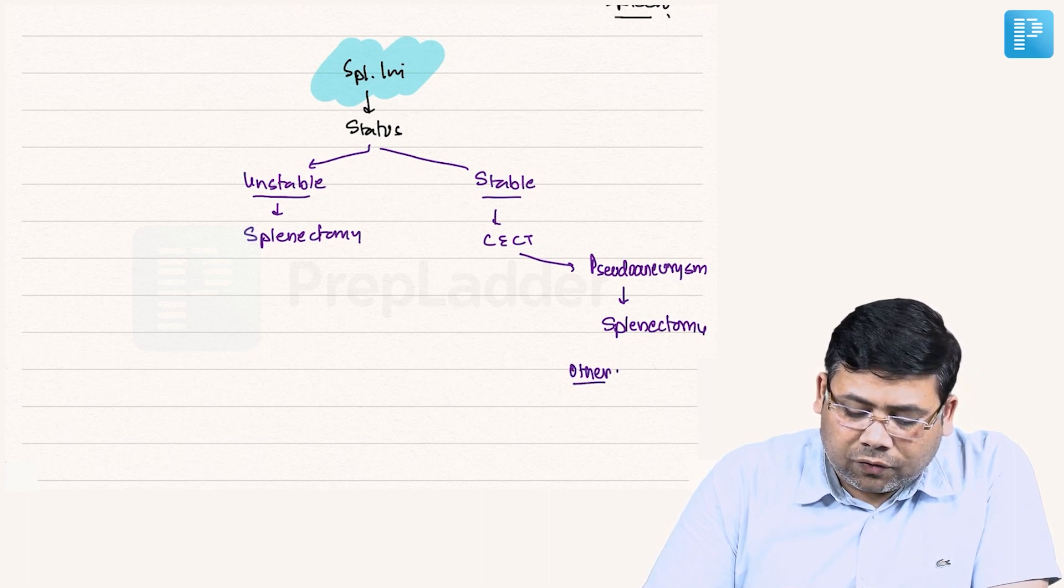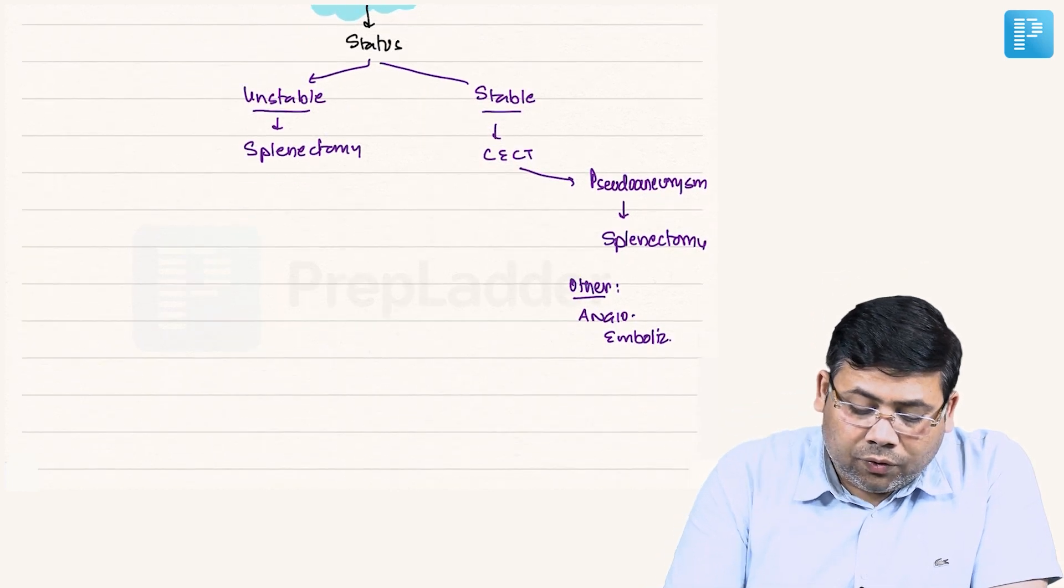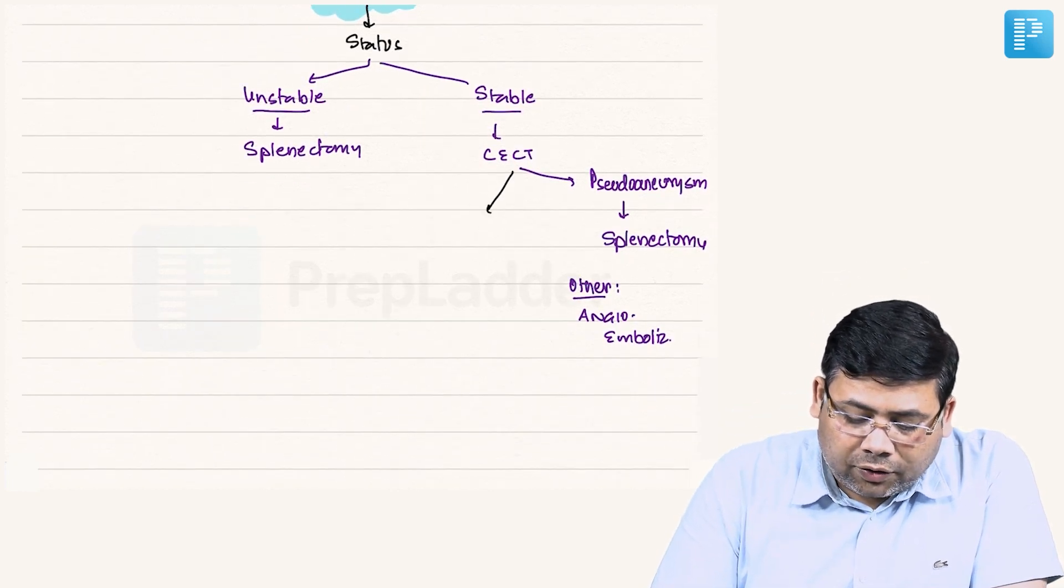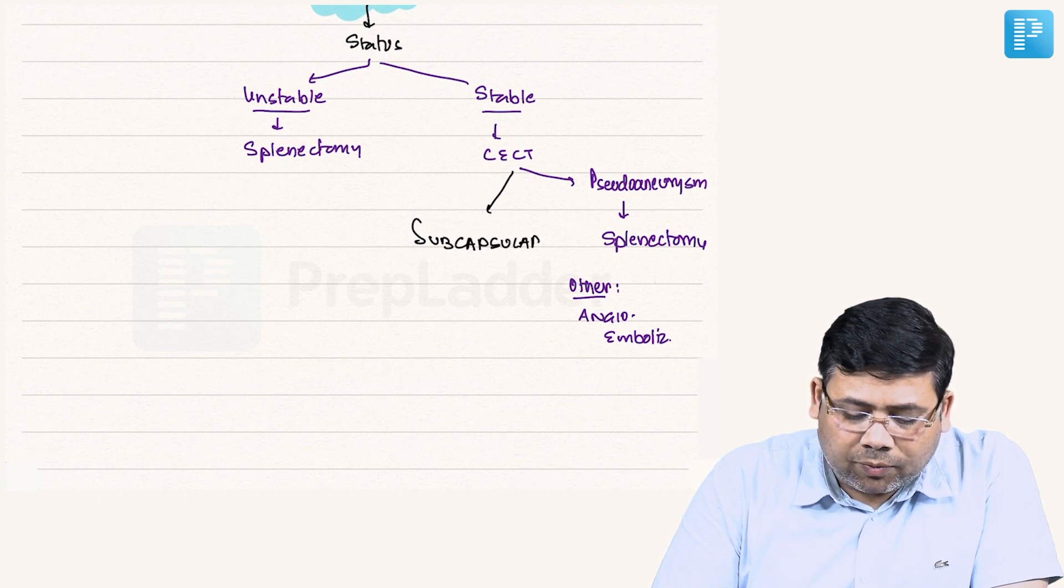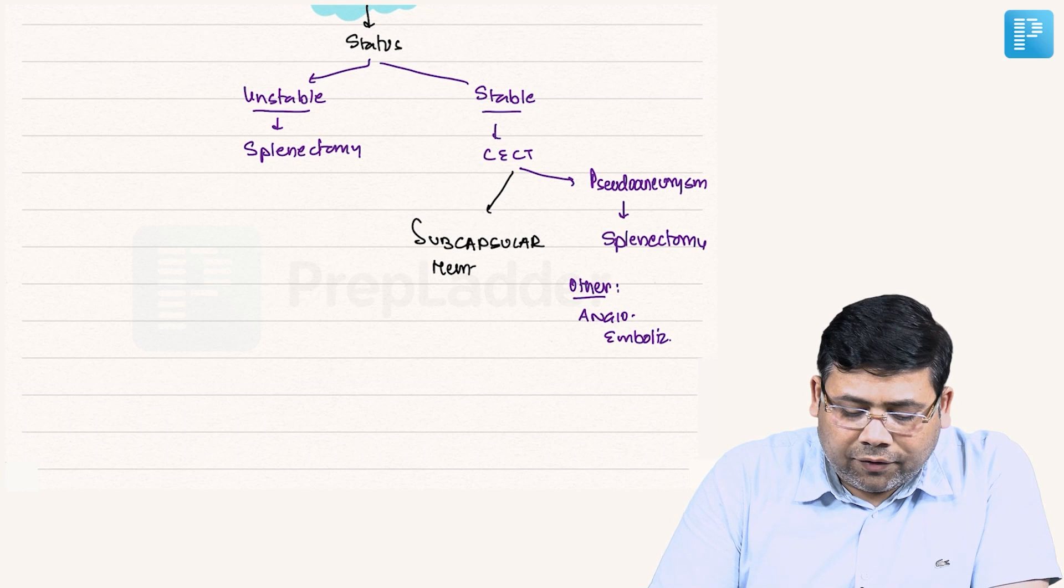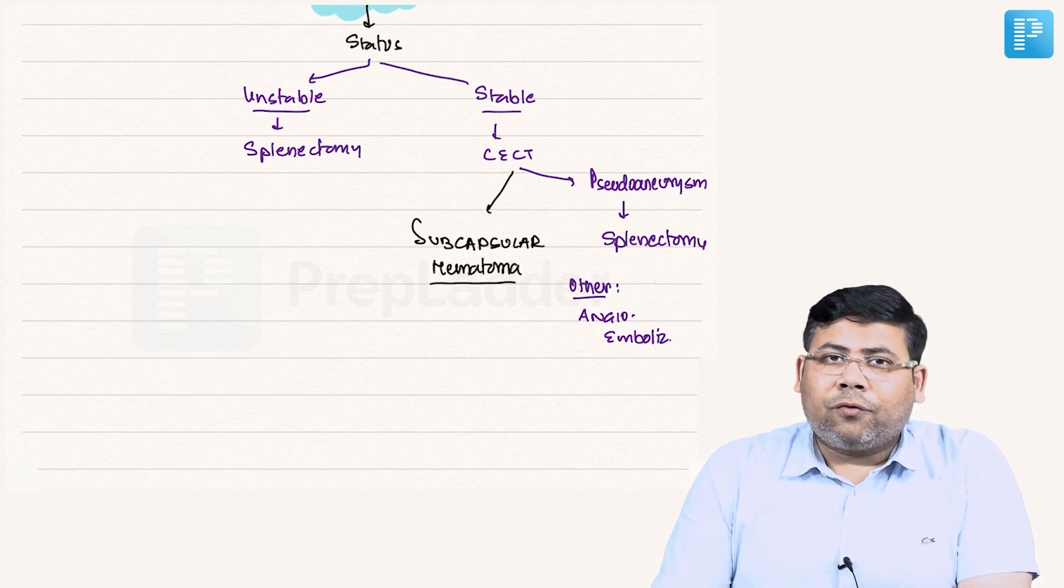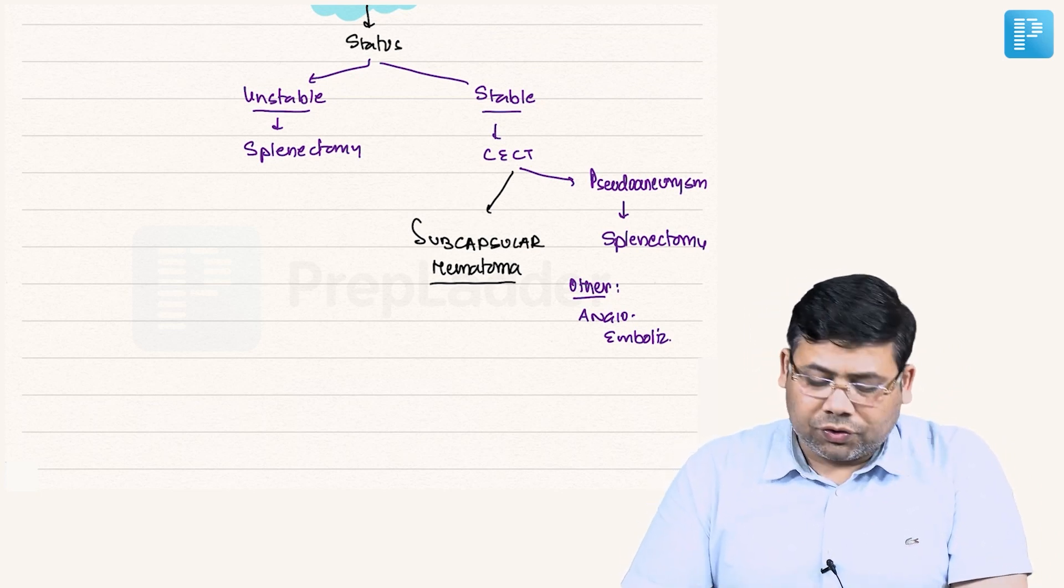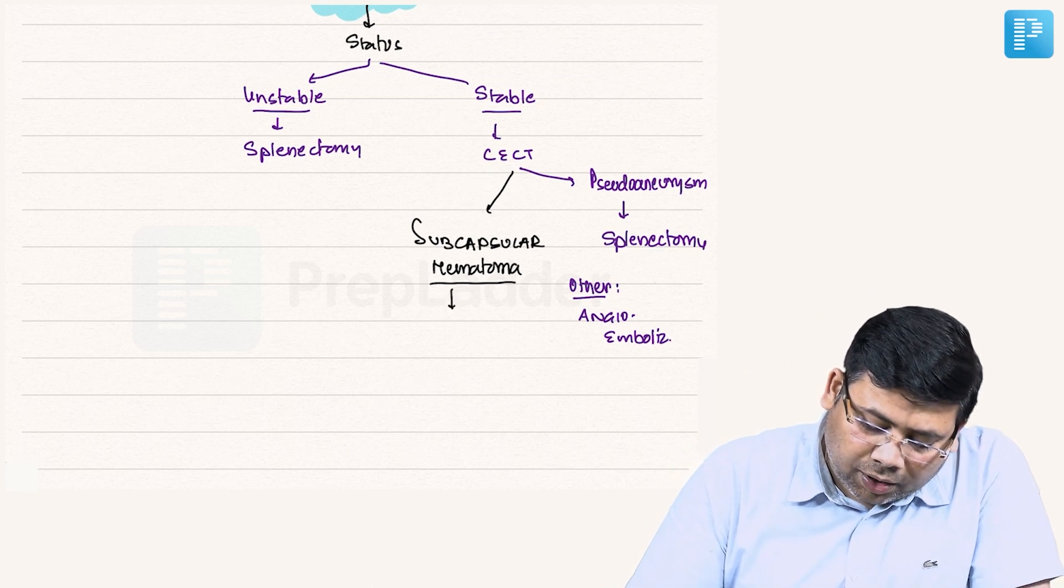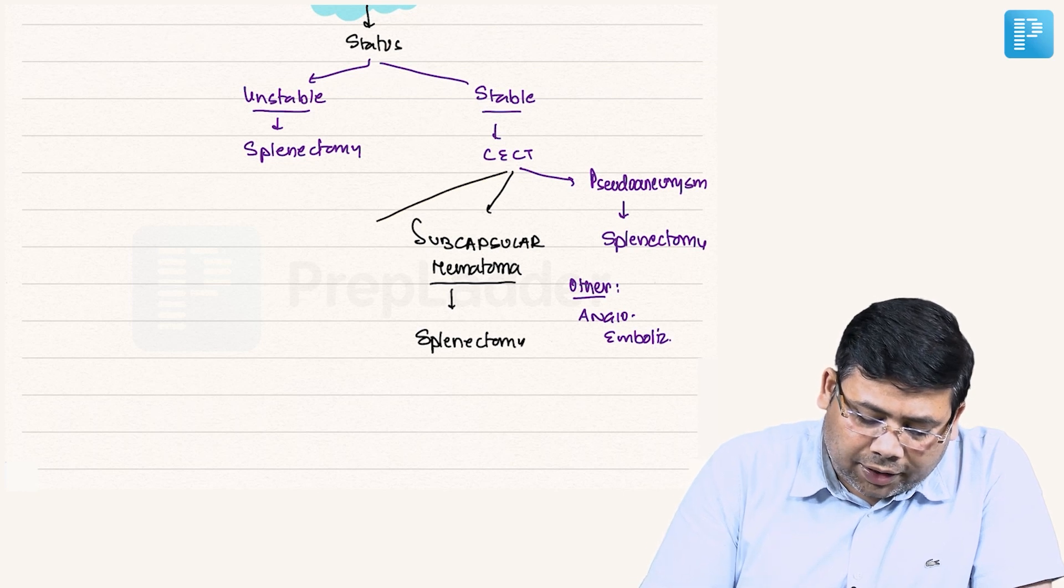The next option is you can get to see subcapsular hematoma. Remember, splenic subcapsular hematoma is a rare entity where the spleen will continue to bleed unless it is removed. If you don't remove it, the spleen will get fractured and you'll have a massive sudden hypovolemic shock. So subcapsular hematoma, again the concept is splenectomy.